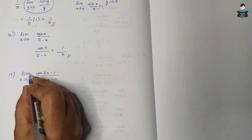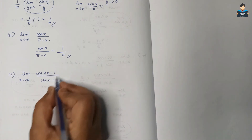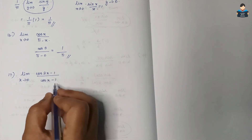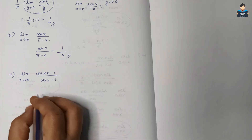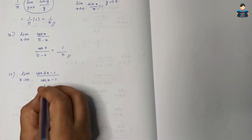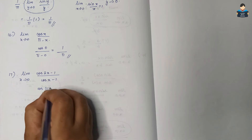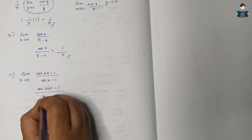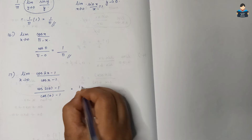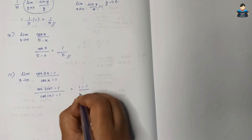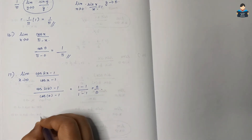Question 17: limit x tends to 0 of (cos 2x − 1) by (cos x − 1). When we substitute x = 0: cos(0) − 1 = 1 − 1 = 0, and cos(0) − 1 = 0. So we get 0/0 form.